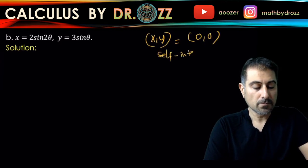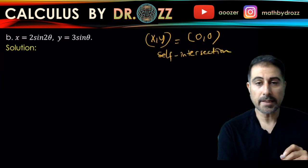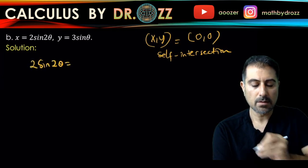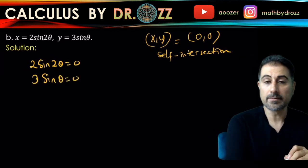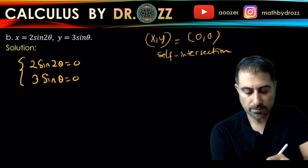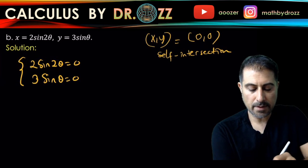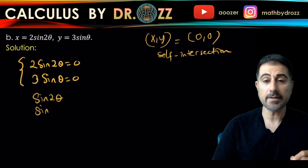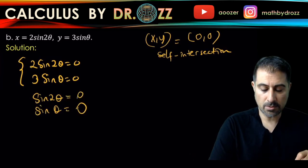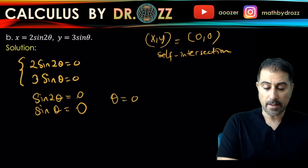This is a self-intersection, or the curve crossing itself, and I want to find out what theta value corresponds to that. So all I'm going to do is set the x and y's to zero and then solve this for theta. You have sine 2 theta equals zero and sine theta equals zero.